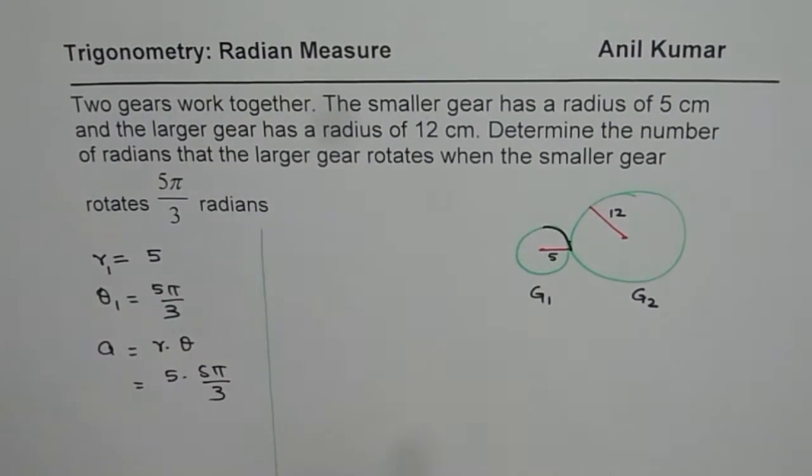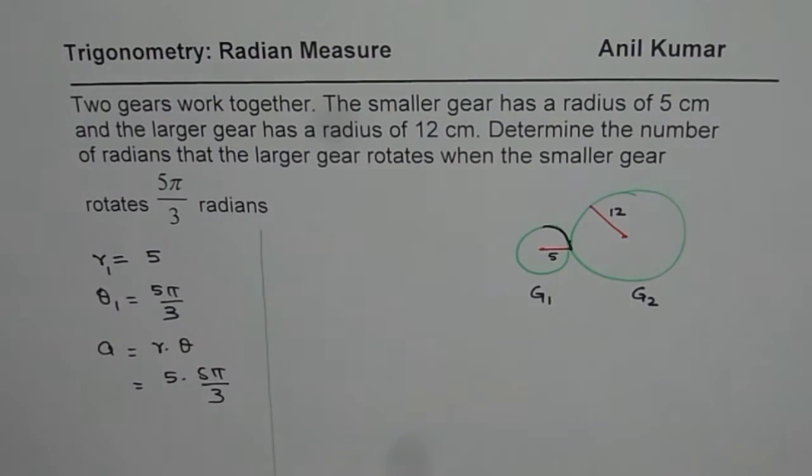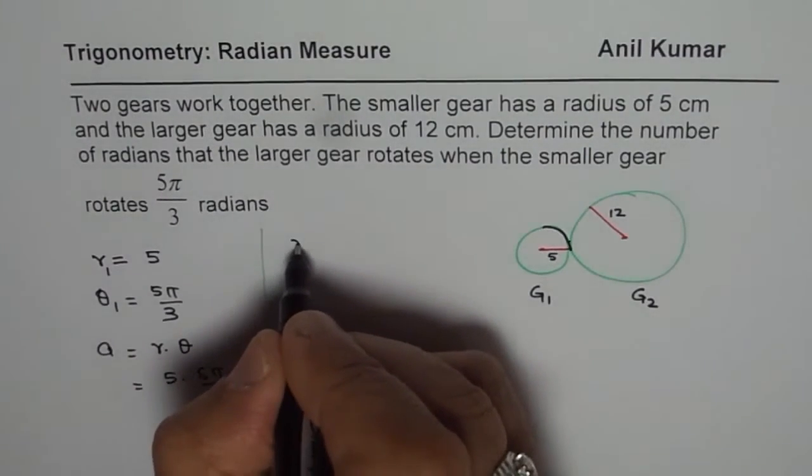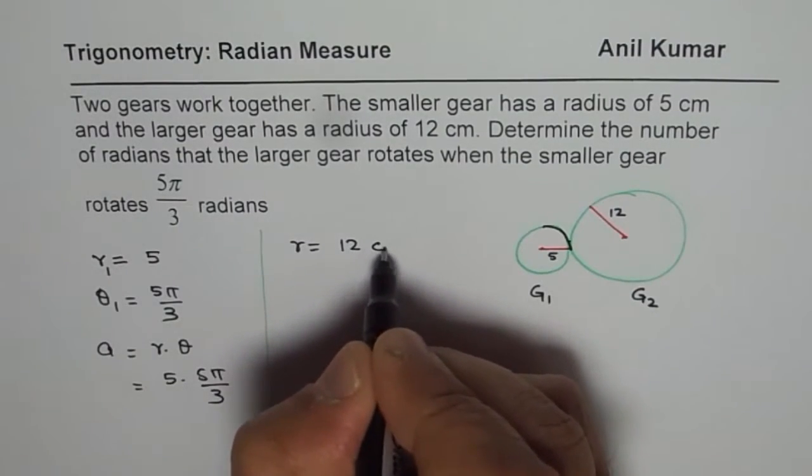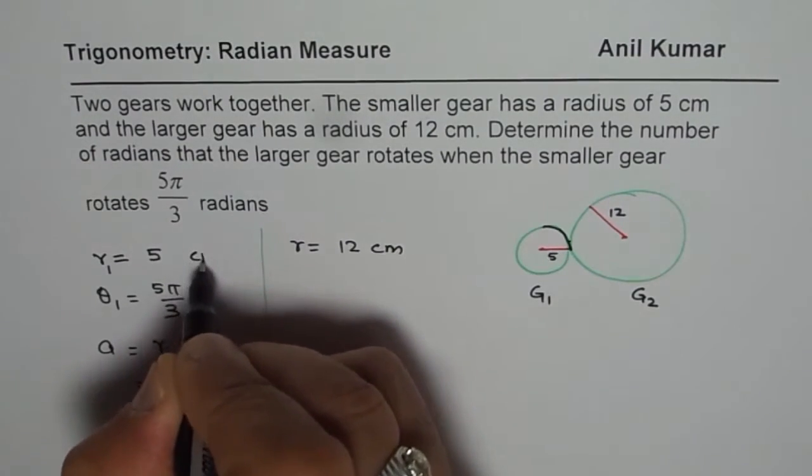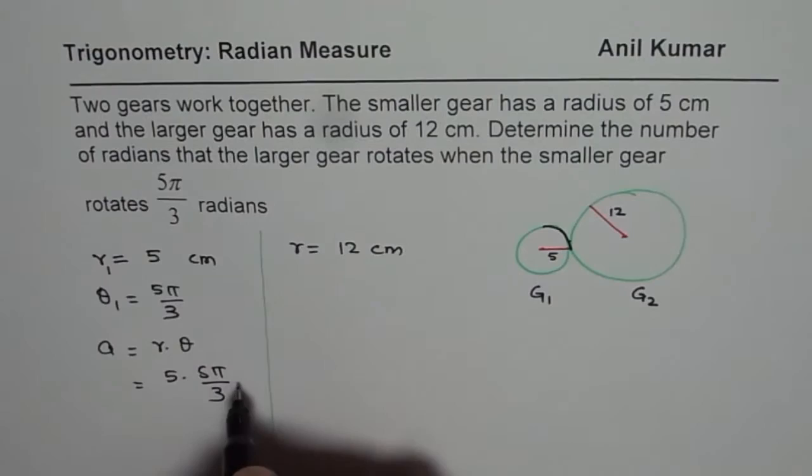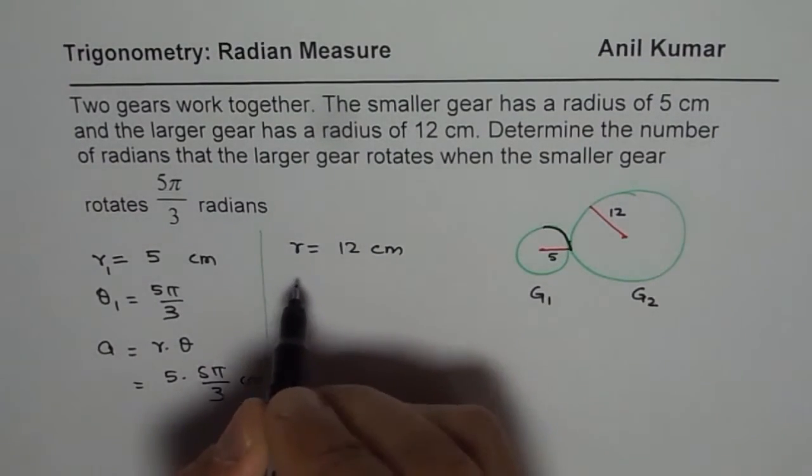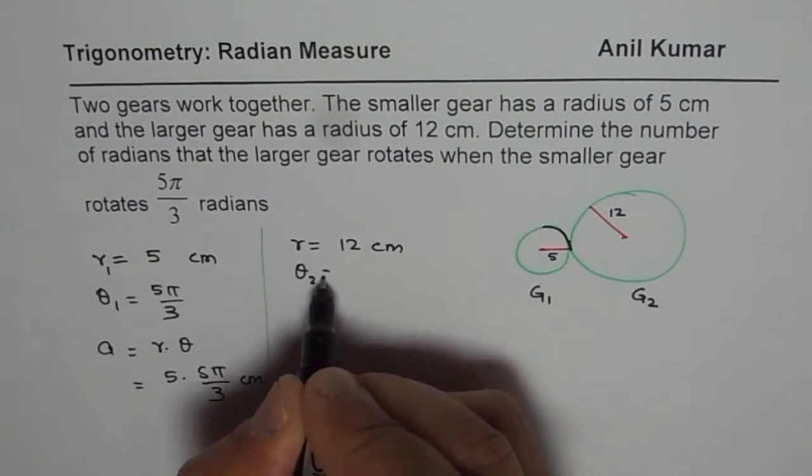However, for the bigger gear, what we know here is that radius r is equal to 12 centimeters. All are in centimeters in this case. And we need to find θ.